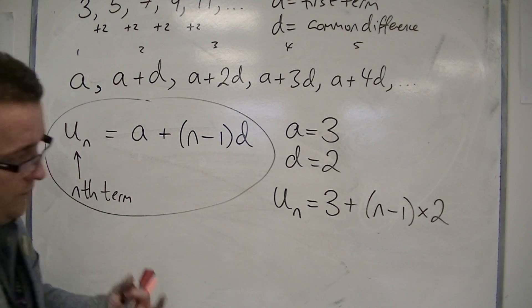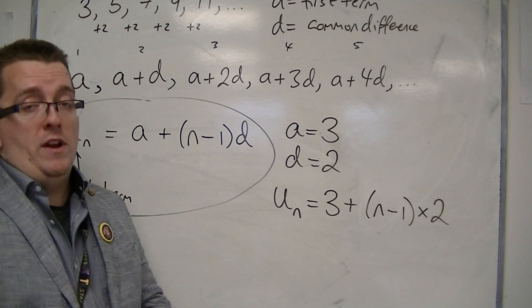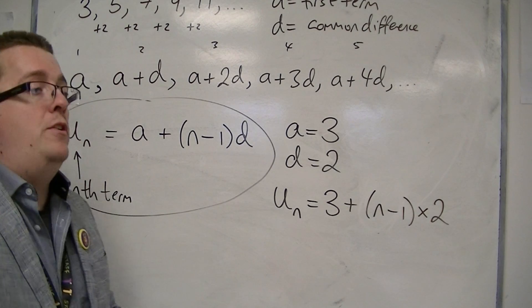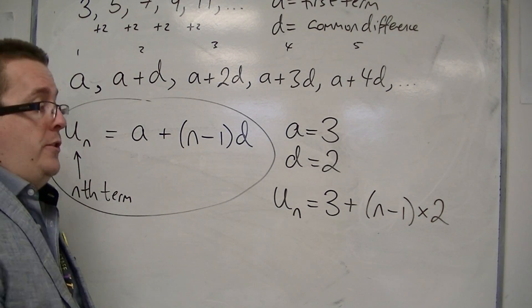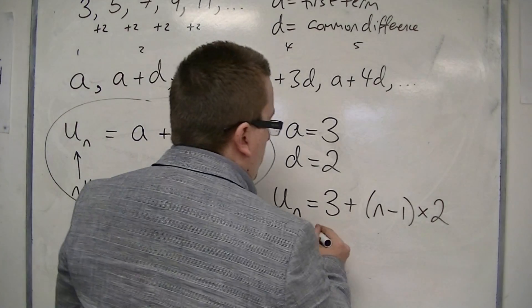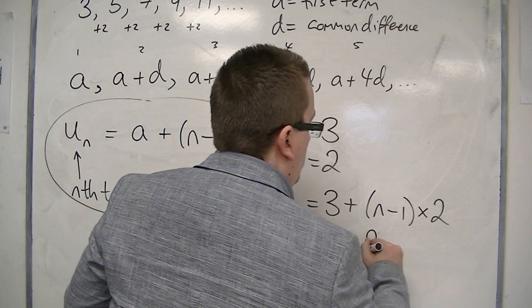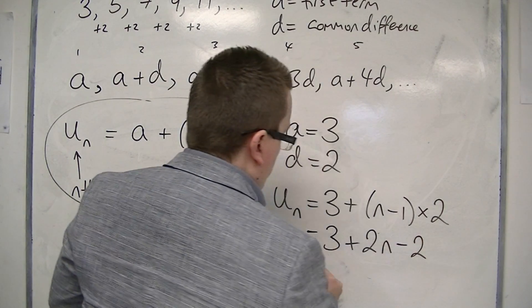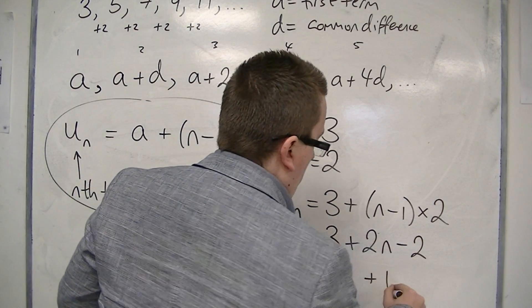So when you were used to writing down the nth term, you probably wrote it down differently when you were doing GCSE rather than when you were doing it here. You can multiply this out: 3 plus 2n minus 2, then simplify to get 2n plus 1.